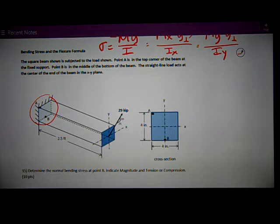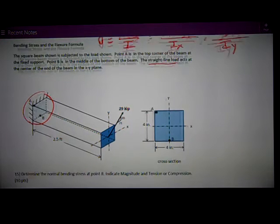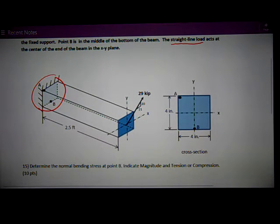We're going to divide it into two parts and analyze it that way. The straight line load acts at the center of the end of the beam in the XY plane. That's this 29 kip load. I've got a slope diagram to show its components. The Z-axis is coming out of the end of the beam.